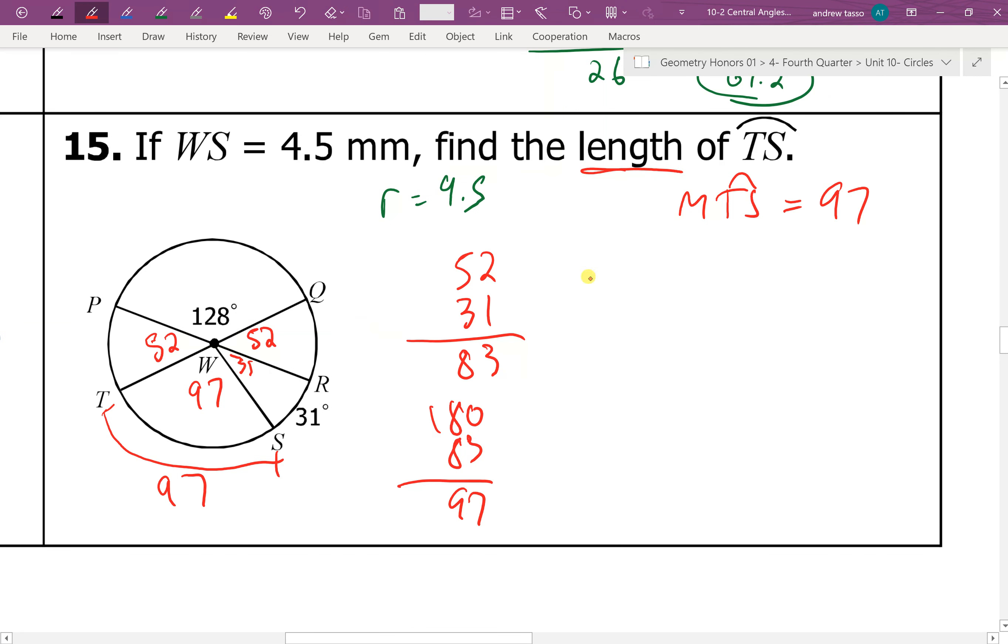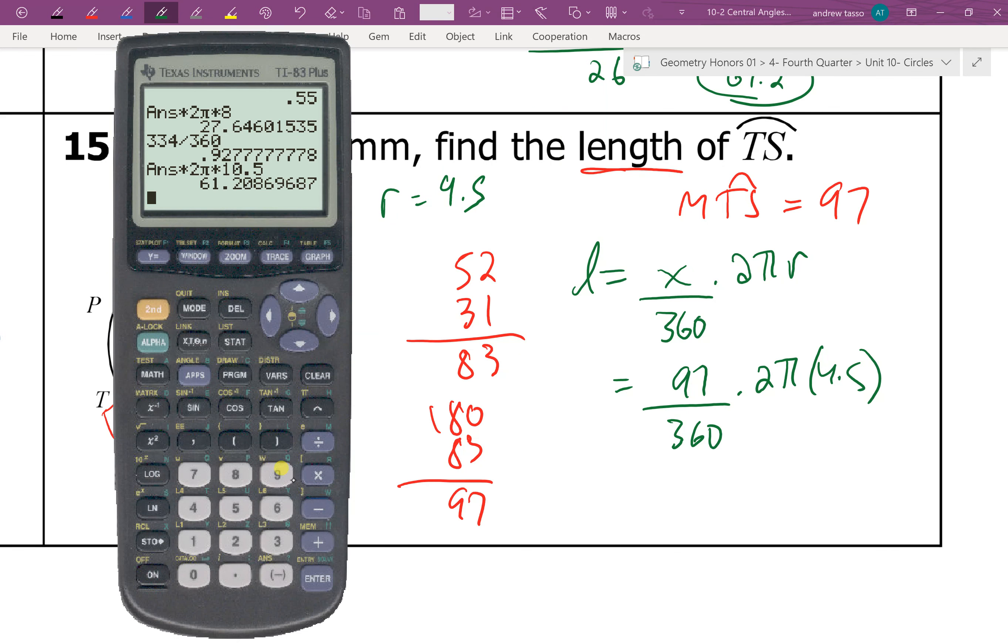But they're asking for the length of the arc. So to get the length of the arc, we have to use this special formula. And we put the degrees on the top. And then we put the radius over here. Into the calculator.